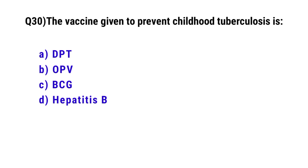Question No. 30. The vaccine given to prevent childhood tuberculosis is? The correct option is BCG.